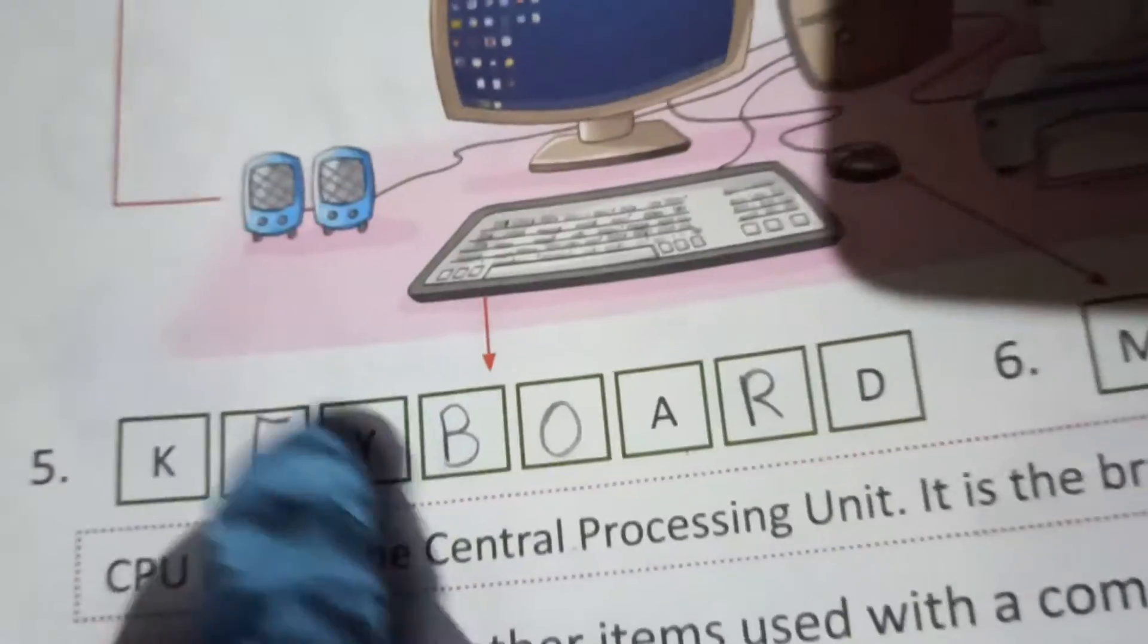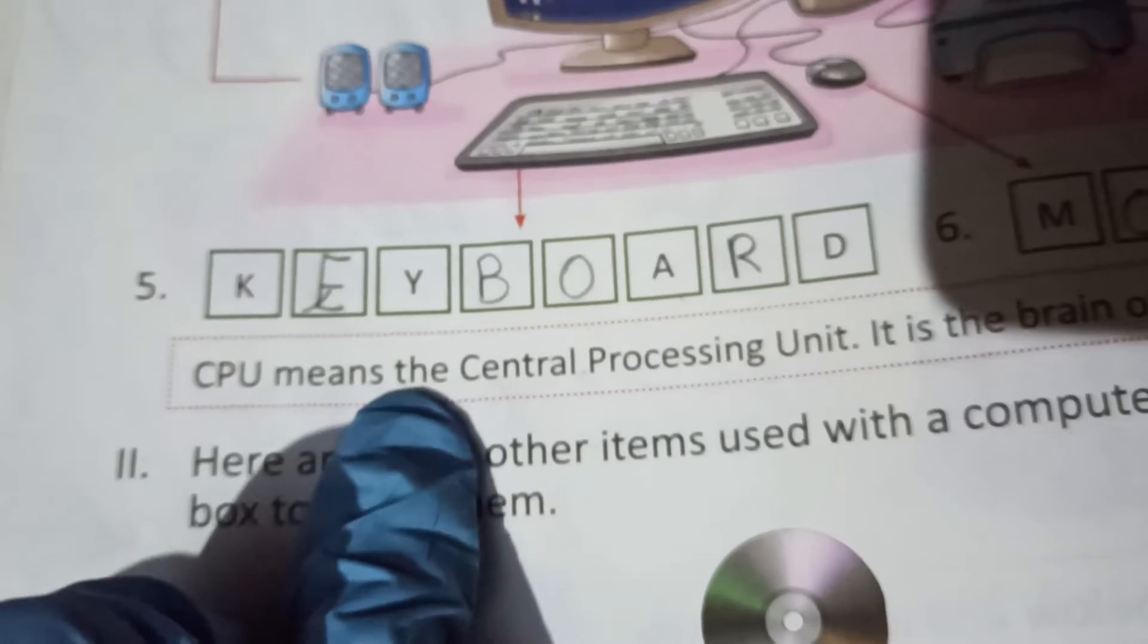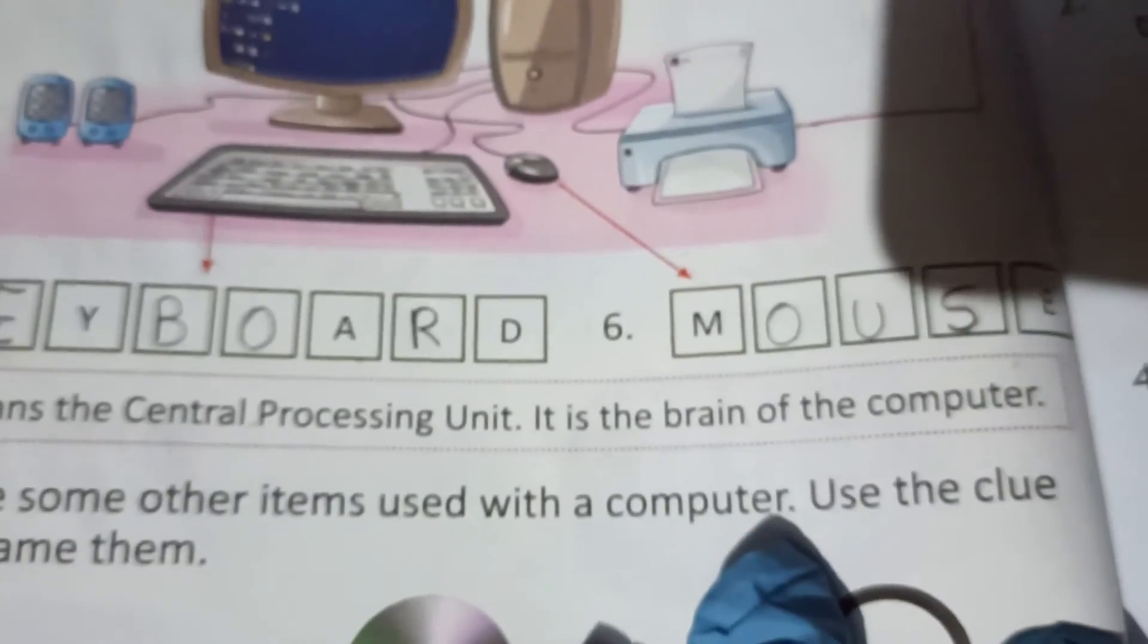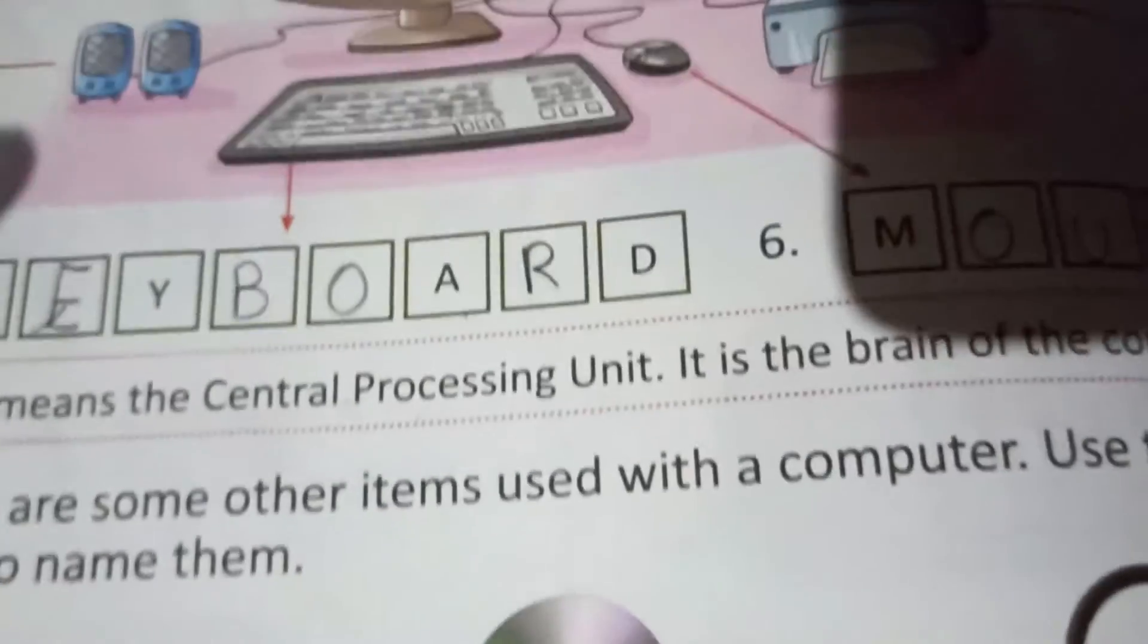Now look here, یہاں لکھا ہے CPU means the Central Processing Unit. It is the brain of the computer. یہ computer کا brain ہوتا ہے, دماغ ہوتا ہے computer کا.